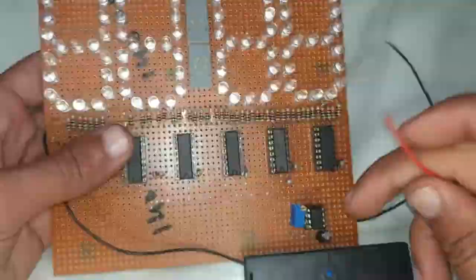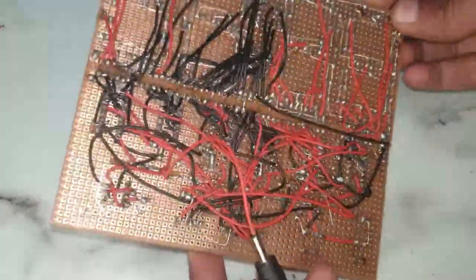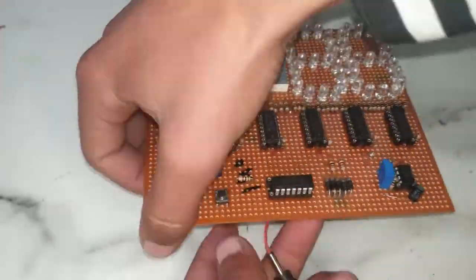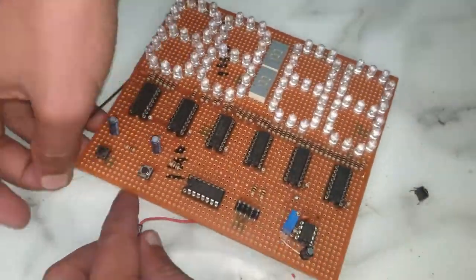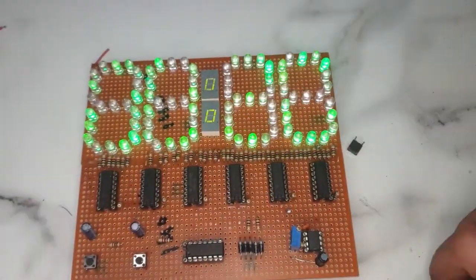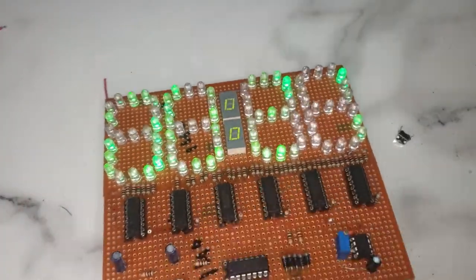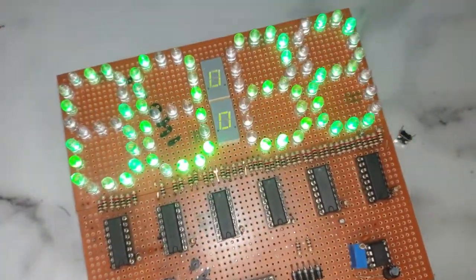Now we will place the ICs for seconds. Now we will connect it with a 5 volt power supply. We can see that some of the LEDs are not glowing, so we must increase the voltage to 12 volts.